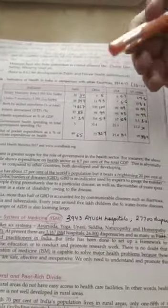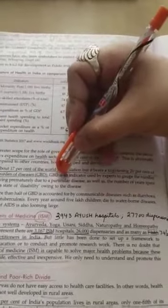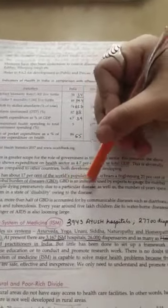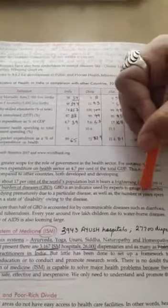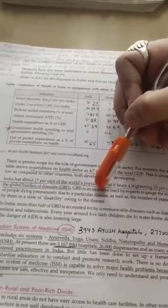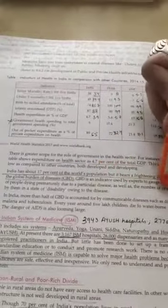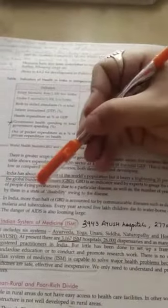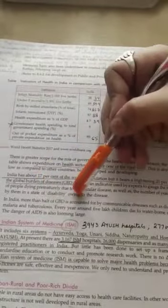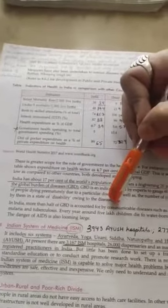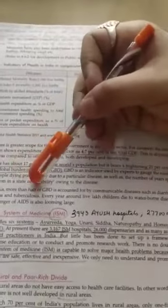Global burden of disease is an indicator used by experts to gauge the number of people dying prematurely due to a particular disease as well as the number of years spent by them in the state of disability owing to the disease. So due to that disease, how many years they spent in disability.